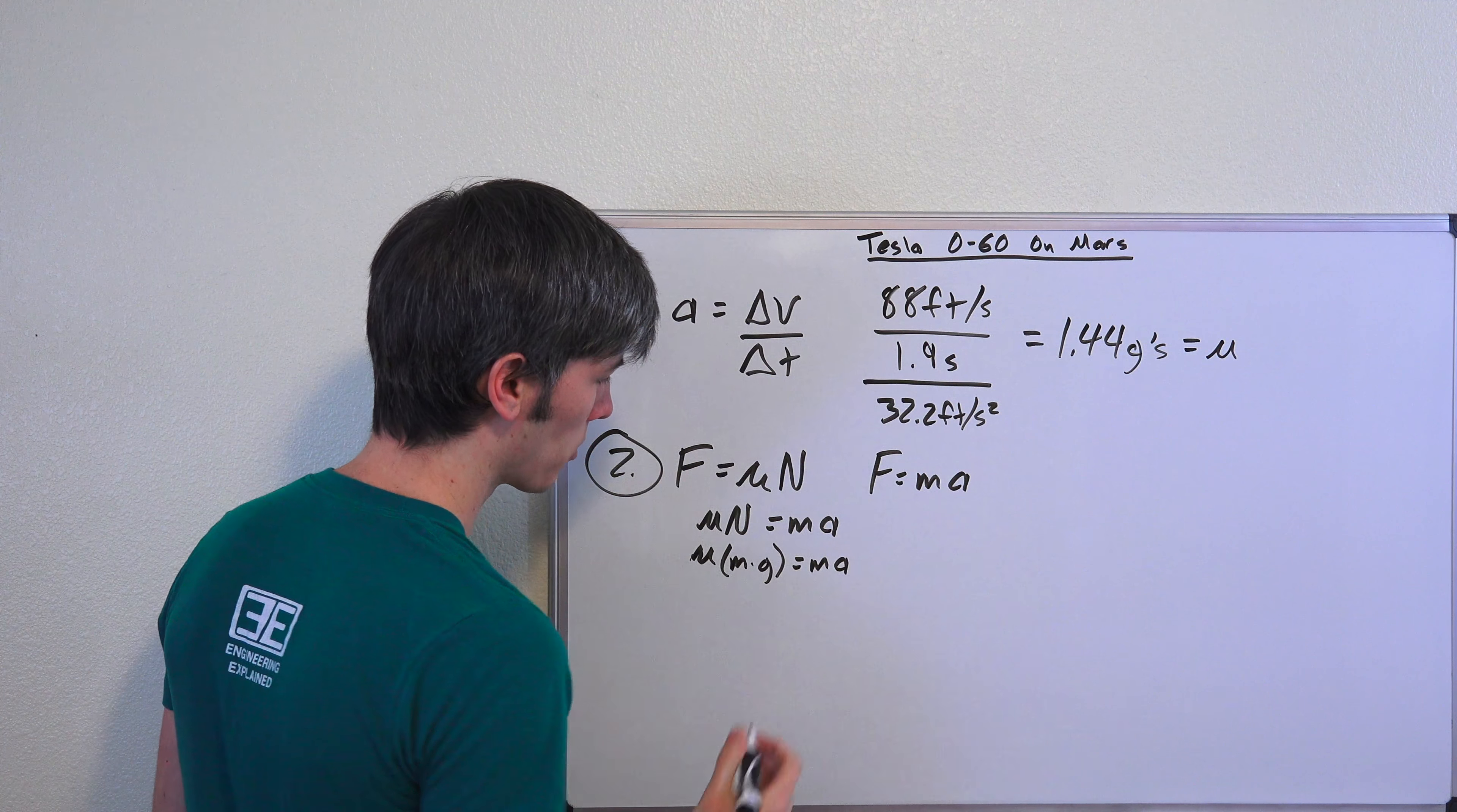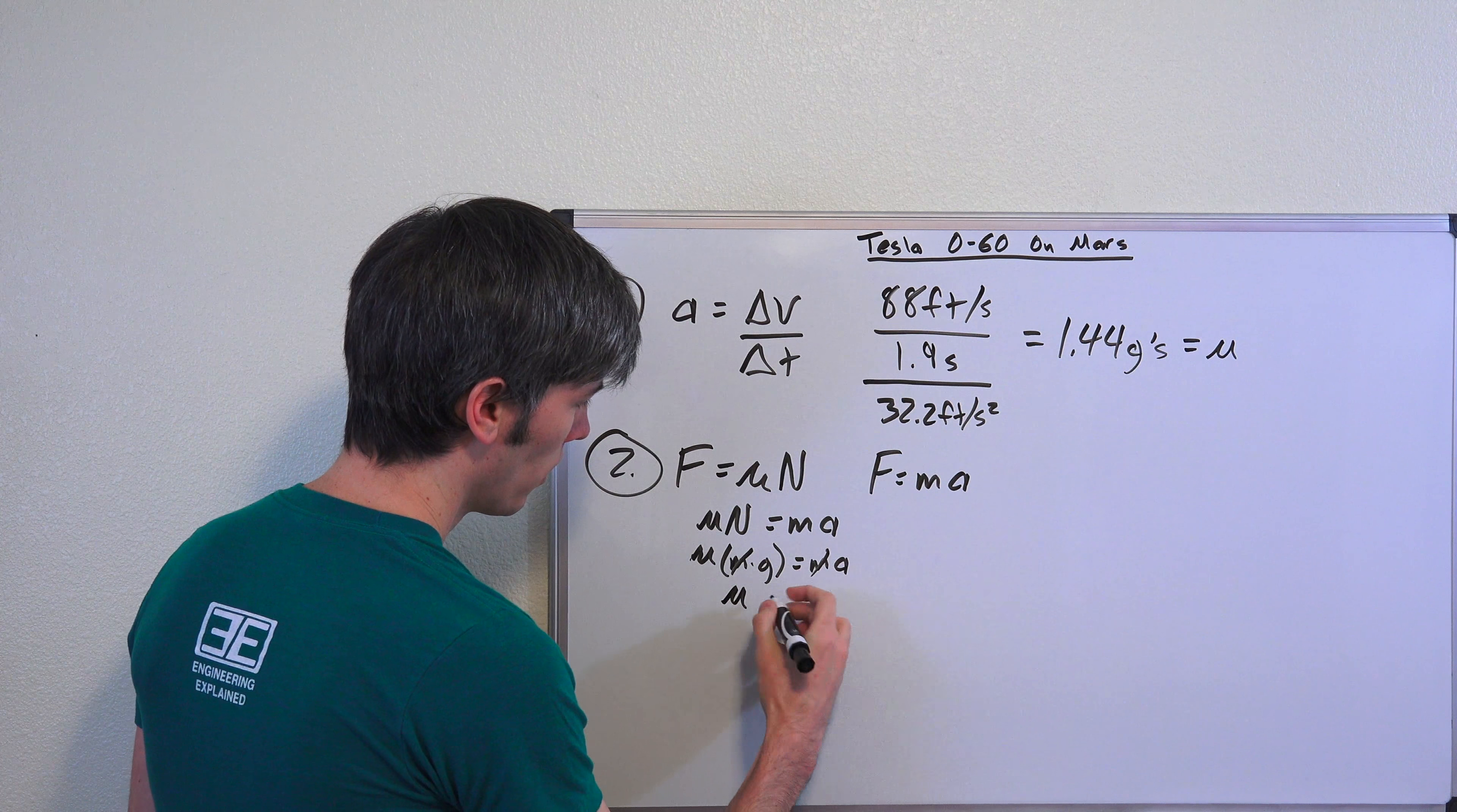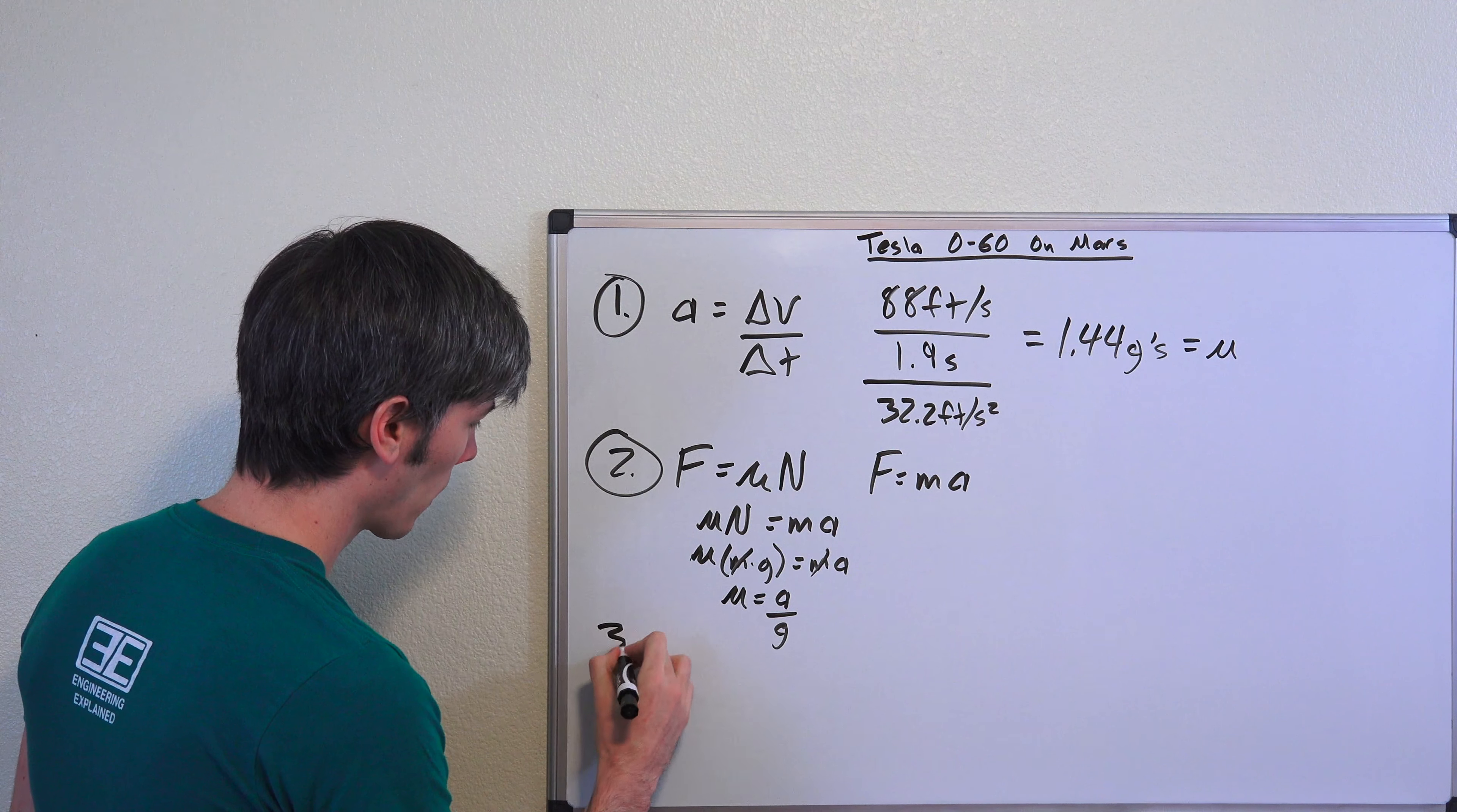Now normal force, we can split that up and say that's equal to mass times gravity, equals mass times acceleration. We can cut out the mass there. Now we have frictional coefficient equals acceleration divided by G. And that's exactly what we just did here: a divided by G. And that gives us our frictional coefficient, 1.44 G's is our frictional coefficient. And there's how we proved that.